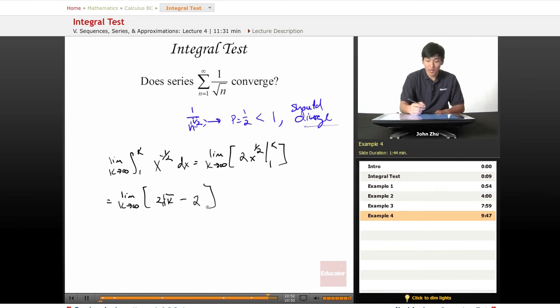If we plug in infinity for k, we get an infinite value minus 2, which won't make a difference in the infinity world. So we get infinity, and this series diverges.